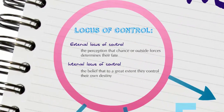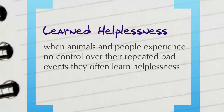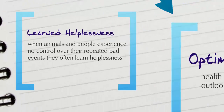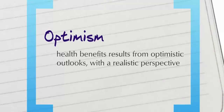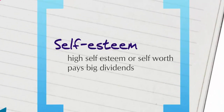In addition to these four major schools of personality development, we can also examine how people perceive their locus of control. An external locus of control is the perception that chance or outside forces determine our fate, while an internal locus of control is the belief that people largely control their own destiny. Learned helplessness occurs when people or animals experience no control over repeated bad events, and so end up learning to be helpless. Opposite to this is optimism, where health benefits can result from an optimistic outlook with a realistic perspective. High self-esteem and a sense of self-worth pay very big dividends in health — people who feel good about themselves have fewer sleepless nights, are less prone to pressure, are less shy and lonely, and are generally happier.